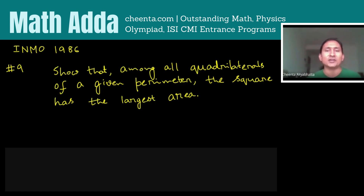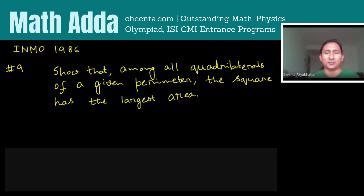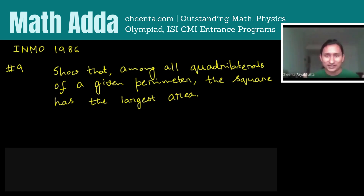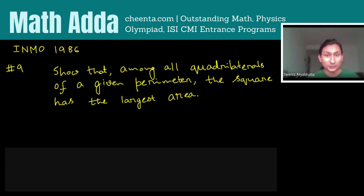Solving an isoperimetric problem rigorously requires some work — you have to verify many small things. In today's episode, I'm not going to verify all things. I'm going to solve this particular problem, which is a very basic version of the isoperimetric problem, and I will also give you some idea about how to prove the general problem for circles.